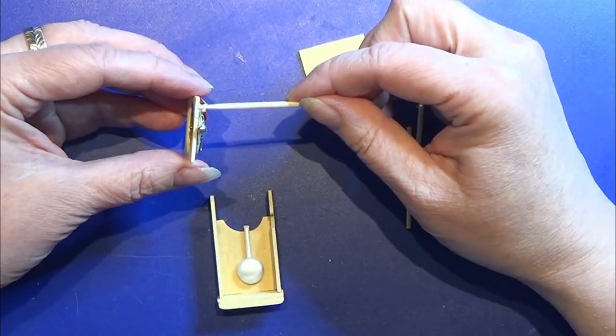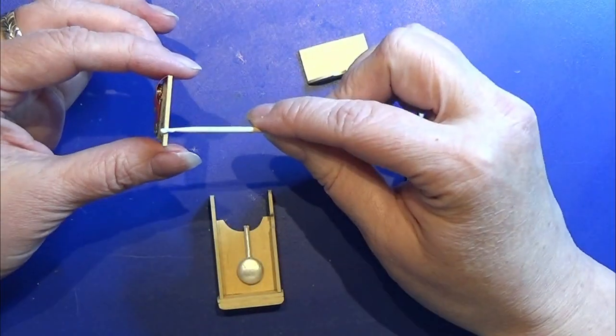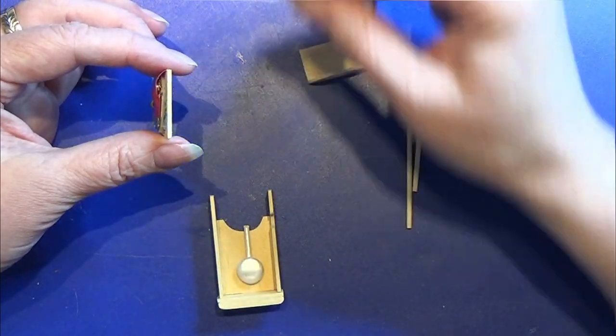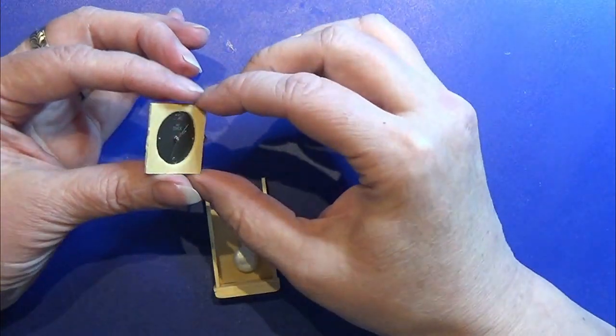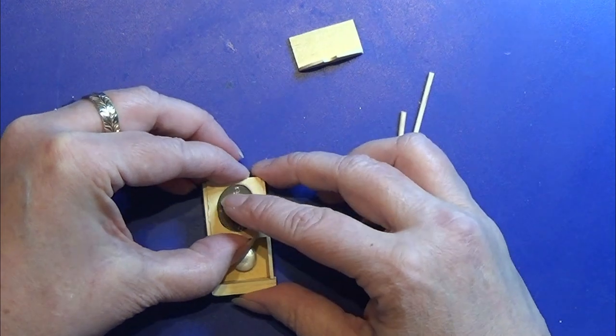Then I glue the clock face onto the wall clock and I'm very careful with this so I don't glue anything that's not supposed to be glued.